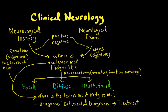We need neuroanatomy to do this. We need to know about neurological structure, function, and pathways to figure out whether it's focal, diffuse, or multifocal. And if we put that together with the neurological history and the time course of onset, we figure out what the lesion most likely is — giving us our diagnosis and differential, and treatment.